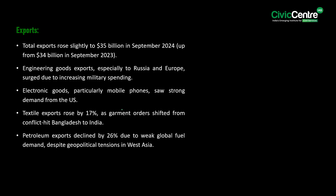Total exports rose slightly to $35 billion in September 2024. Engineering goods exports, especially to Europe and Russia, surged due to increased military spending. Electronic goods, particularly mobile phones, saw strong demand from the US. Textile exports rose by 17% as government orders shifted from conflict-affected Bangladesh to India. Petroleum exports declined by 26% due to weak global fuel demand, despite geopolitical tensions in West Asia.